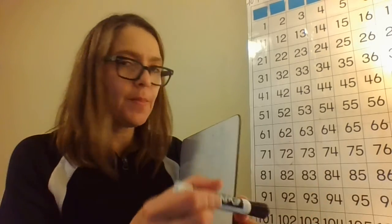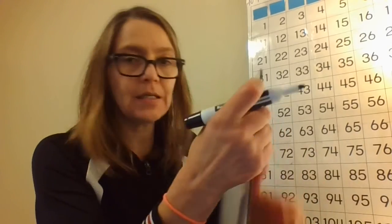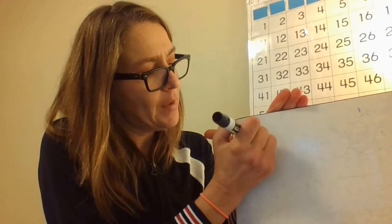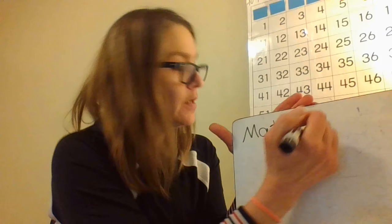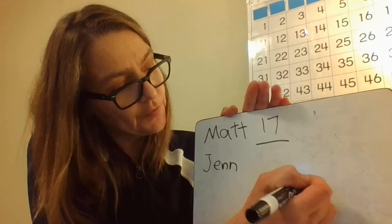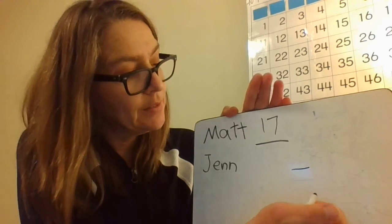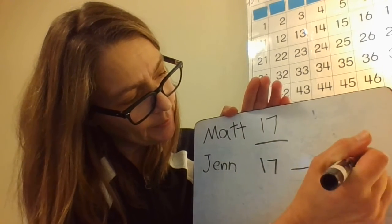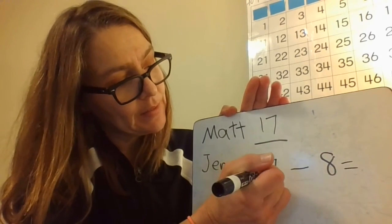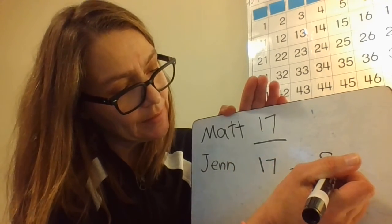They want me to figure out how many tickets each person sold. Matt sold 17 tickets — that's information I already know because they told me. 'Fewer' means subtraction, so if Jen sold 8 fewer and Matt sold 17, I need to find out how many Jen sold: 17 minus 8.